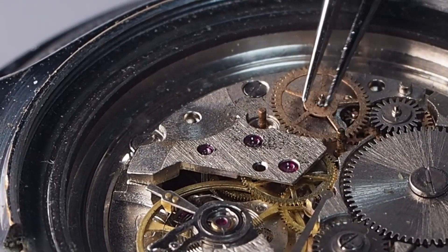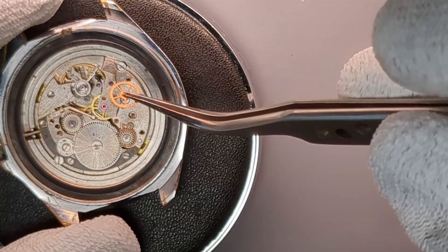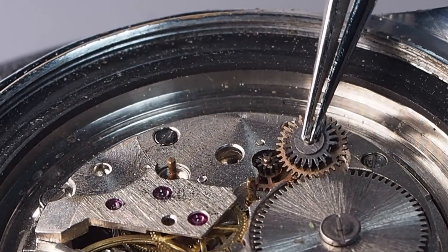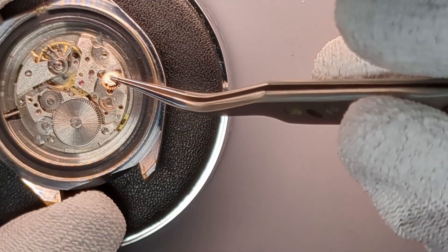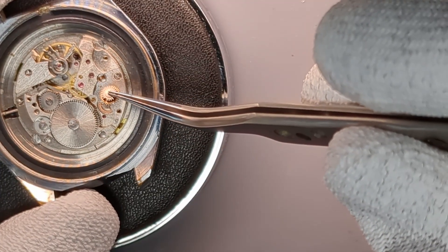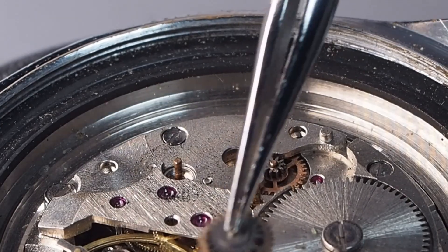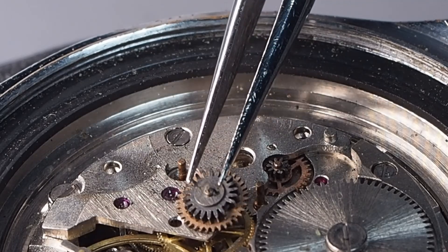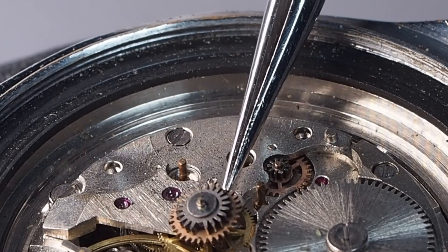Now the transmission wheel and the clutch wheel. Here, in the self-winding mechanism, we can see the clutch wheel, which connects directly to the ratchet wheel. Unfortunately, this wheel has a tooth missing. Later on, when I open the barrel bridge, we will actually find the broken tooth inside.